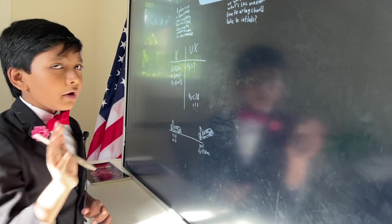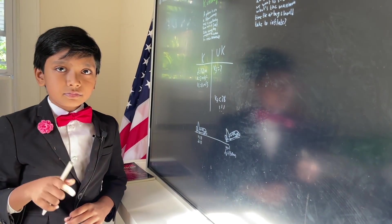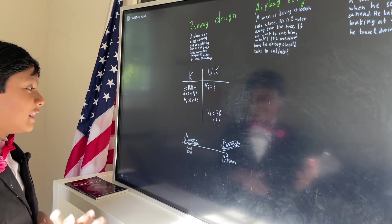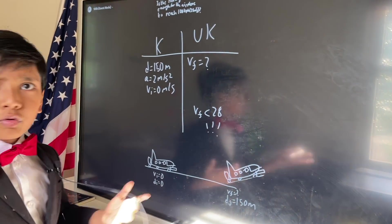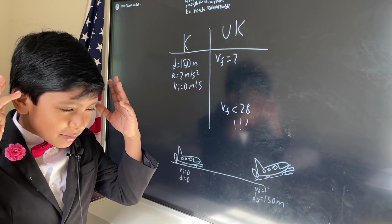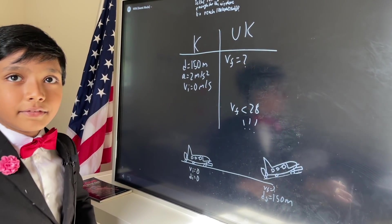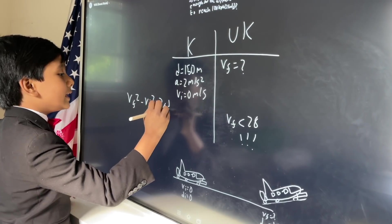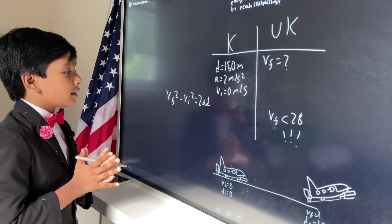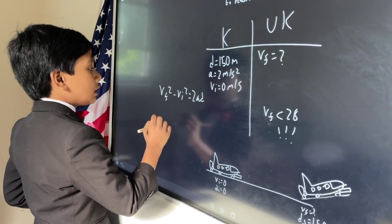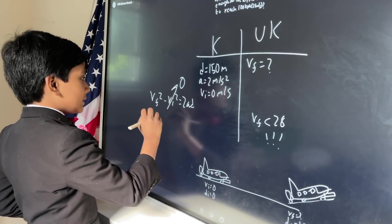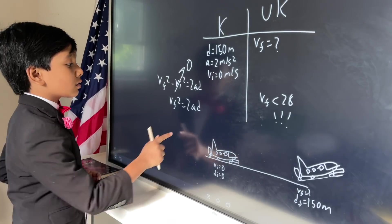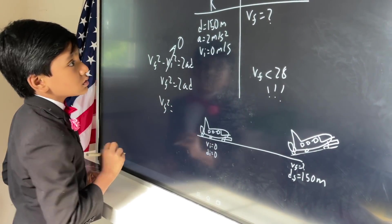This is actually very easy if you just think about it. The equation we'll use is: vf² minus vi² equals 2ad. We already have all the known variables. Since vi is zero, we get vf² equals 2ad, and now comes the big part: vf² equals 2 times 2 times 150.